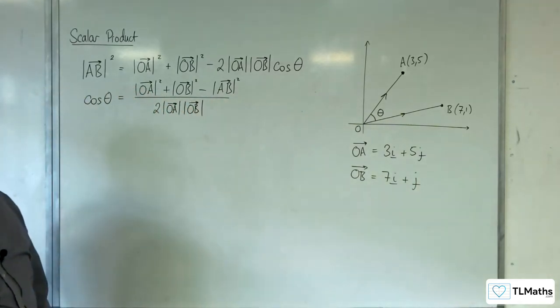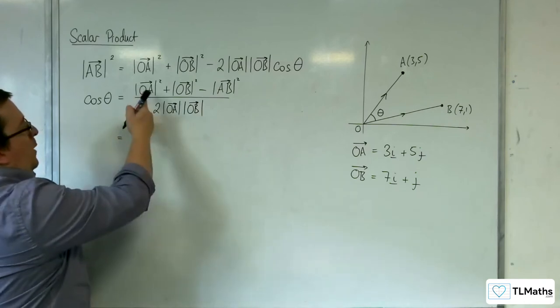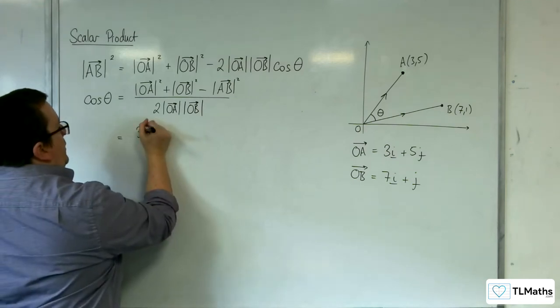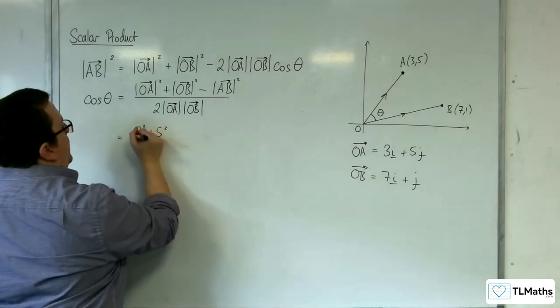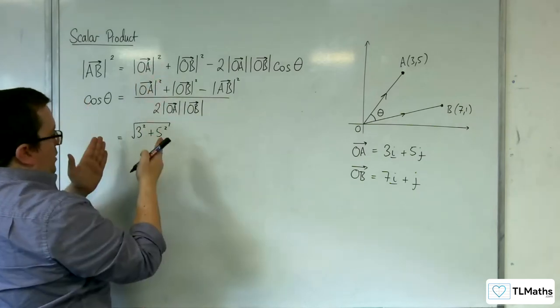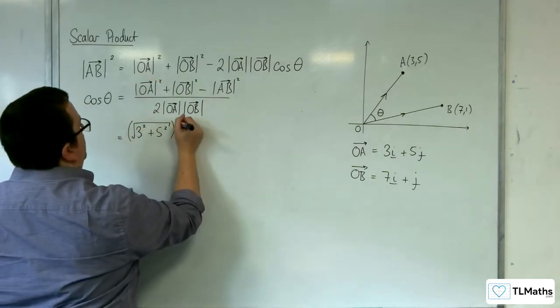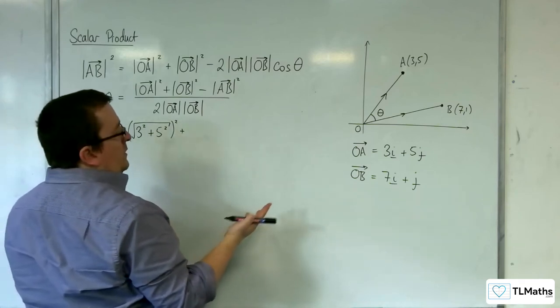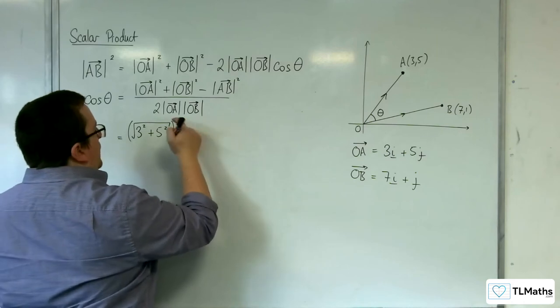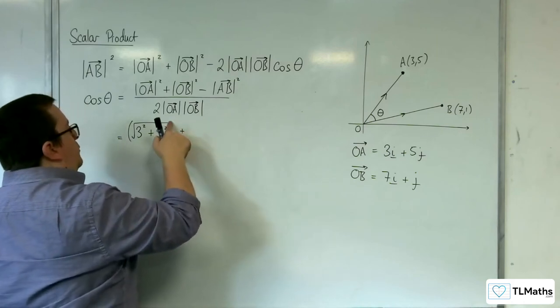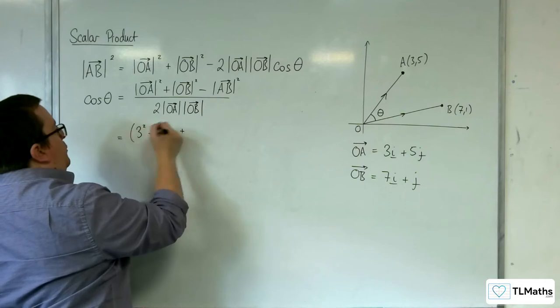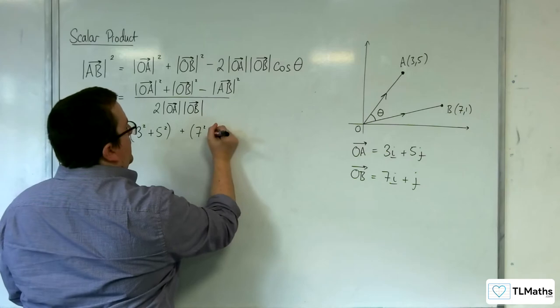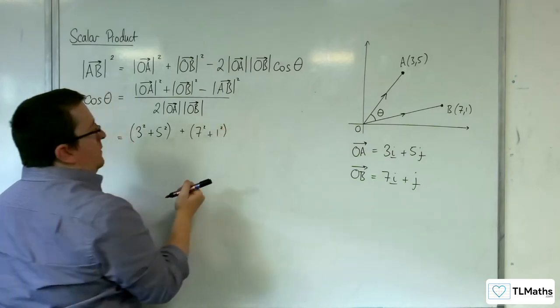So we would have OA, the length of that squared. So that would be 3 squared plus 5 squared, square rooted, so that's OA with the modular signs, but we're squaring that. Plus OB all squared. So let's just get rid of the squared now, square root and square. So we'll have the 3 squared plus the 5 squared, we'll have the 7 squared plus the 1 squared.